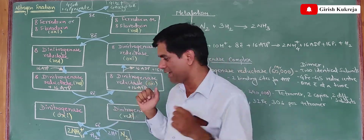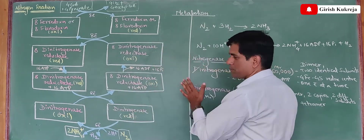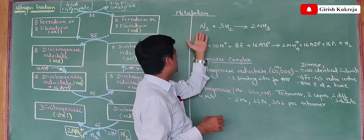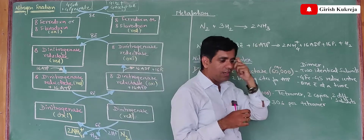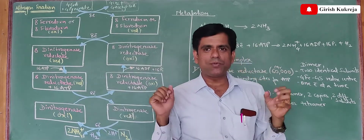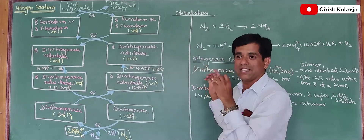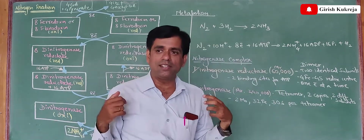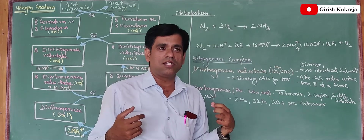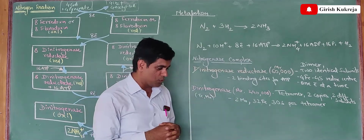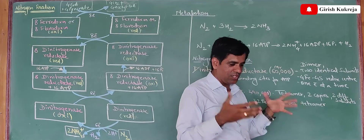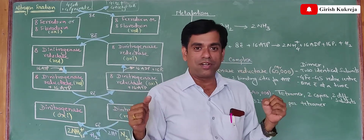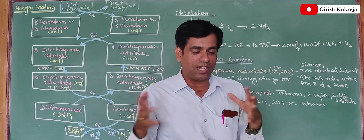Today we are going to discuss some preliminary steps in nitrogen fixation. The combining of N2 with hydrogen to form ammonia — bioenergetically speaking, if you talk about the delta G0 prime of this particular reaction, the reaction is exergonic, at around minus 33.5 kJ per mole. So it seems that this reaction is spontaneous and will take place immediately. But in bioenergetics, it only tells whether the reaction will take place or not.